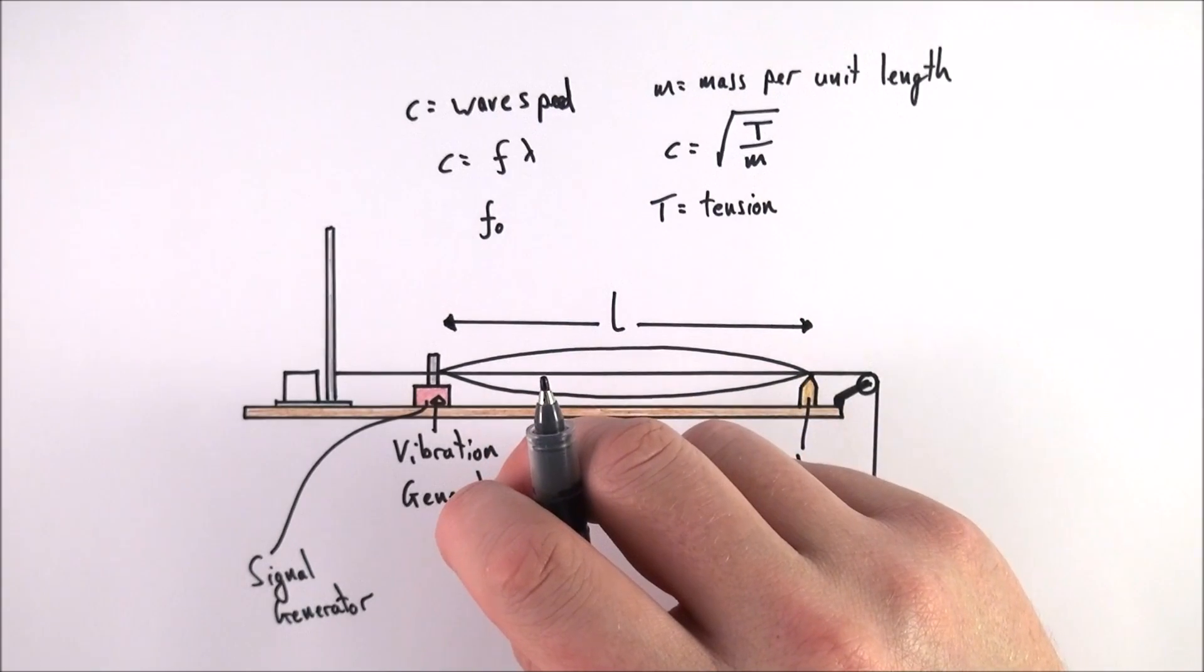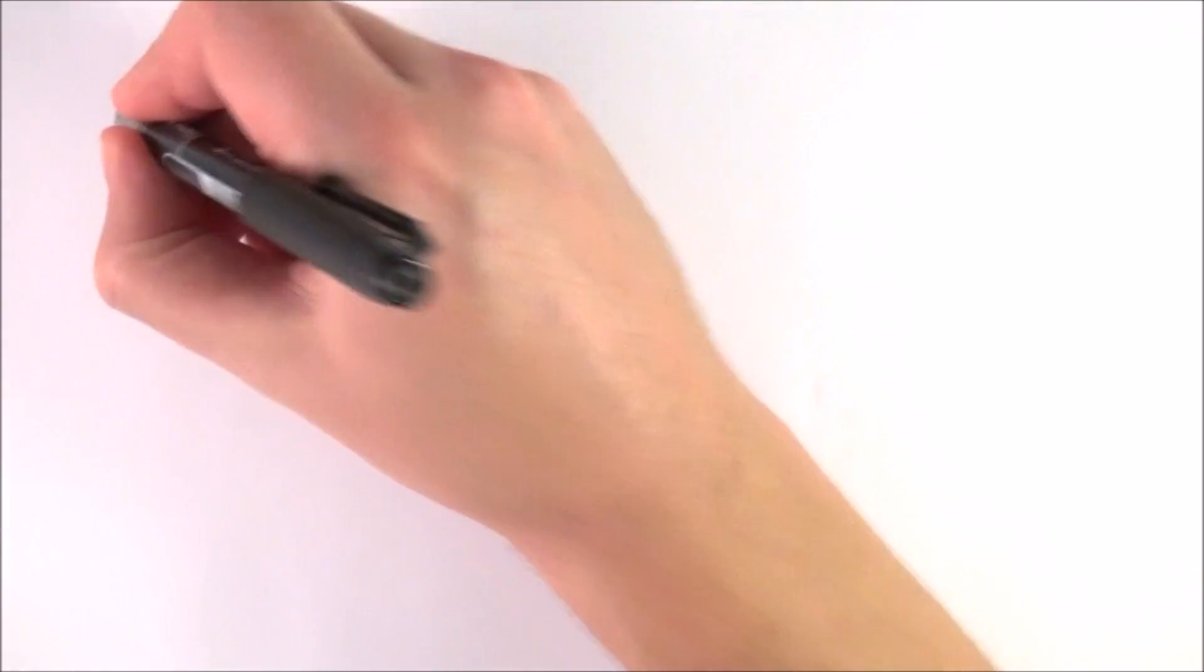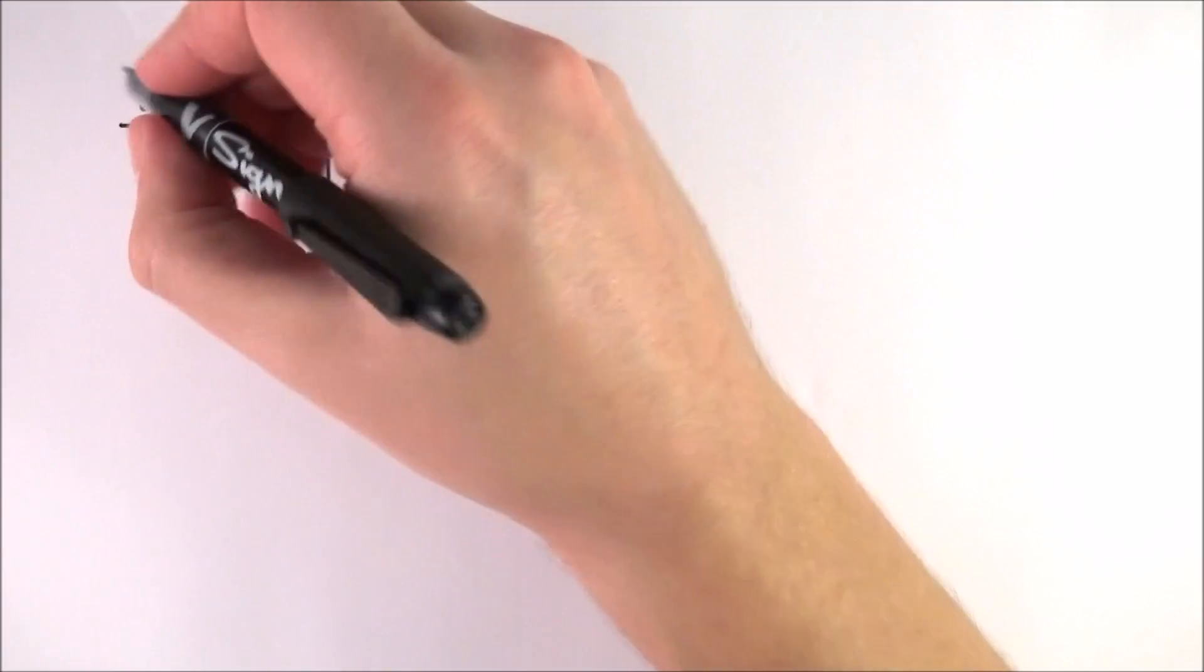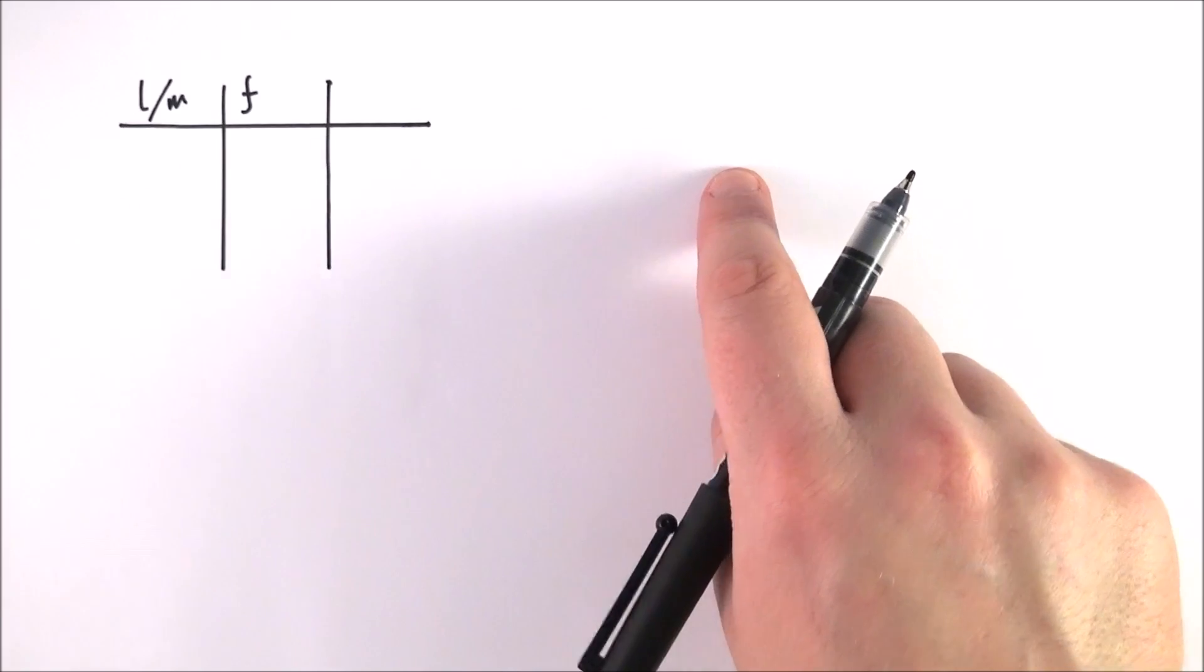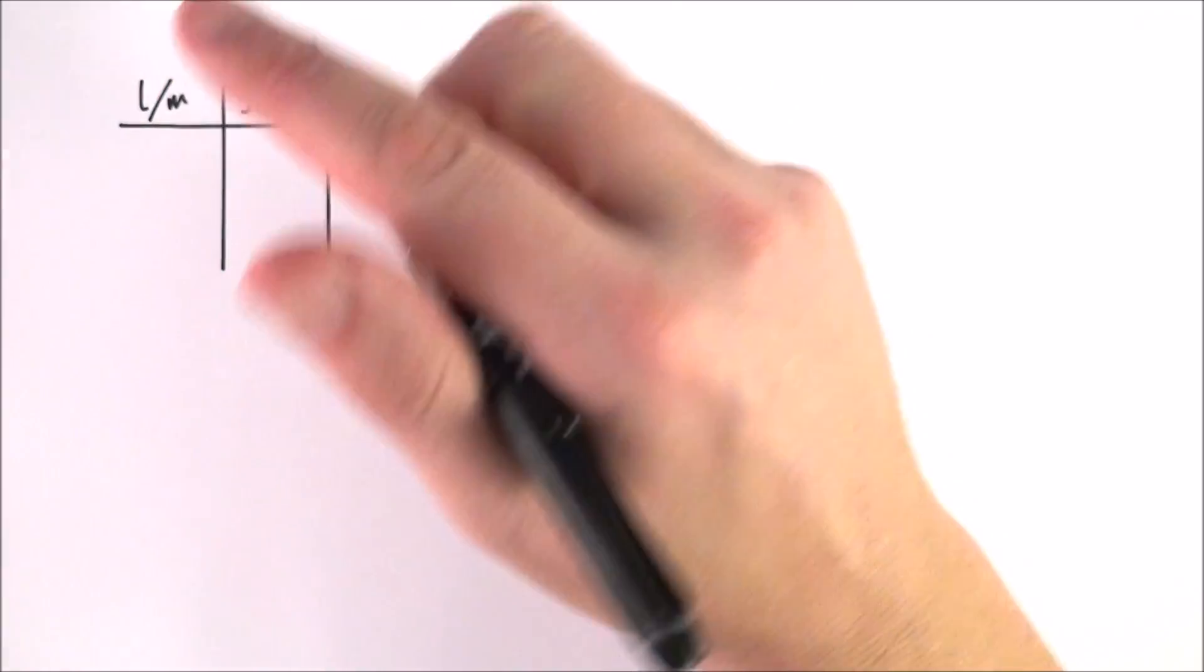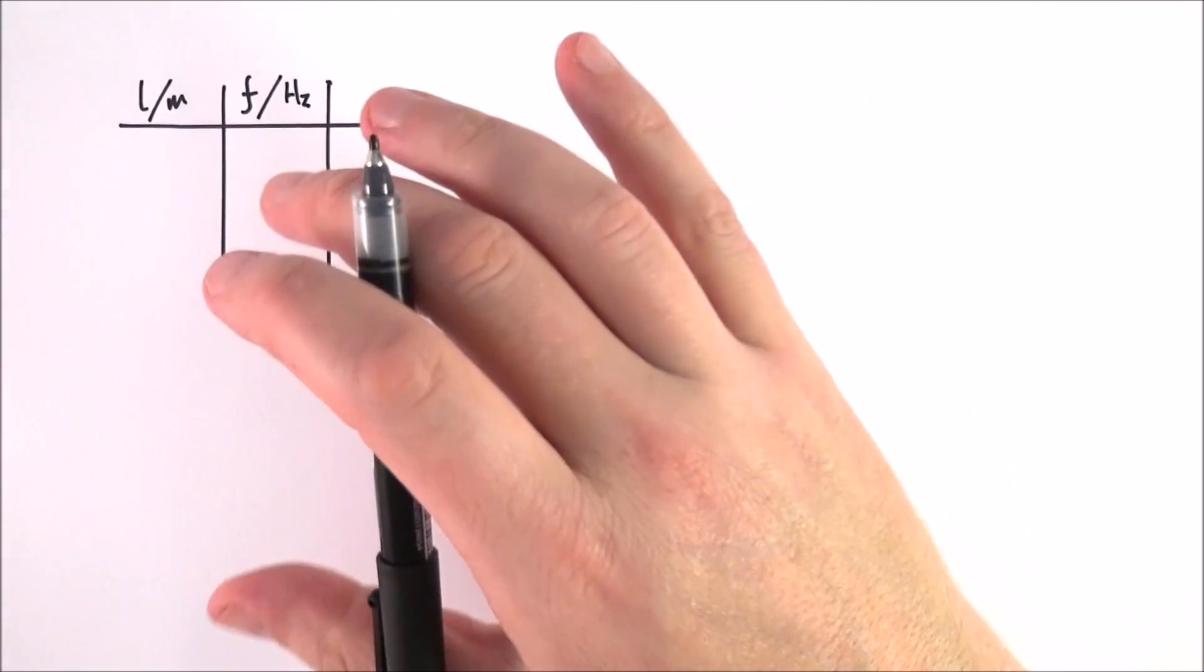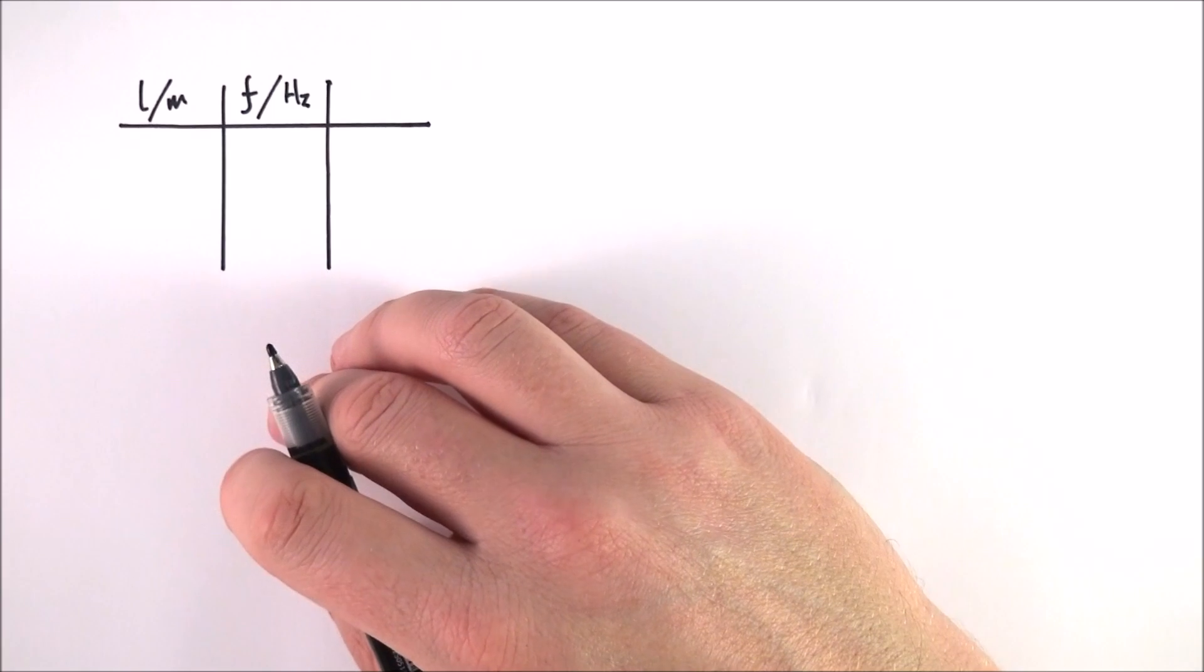One thing that you can investigate with a stationary wave is how the length affects that first fundamental frequency. We can vary the length by moving that bridge up and down, measure the length in meters, and work out the frequency by reading off the signal generator. Remember that we measure frequency in hertz. Then we can use the equations from the last part of the video.